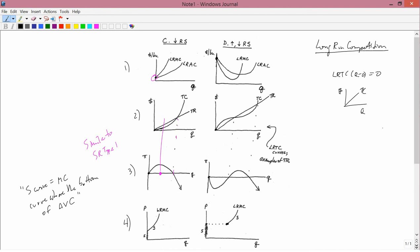Let's turn now to case D, first increasing and then decreasing returns to scale. You have a U-shaped long run average cost curve, also a U-shaped long run marginal cost curve. The total cost curve is shown in row number 2, and we've seen that before.